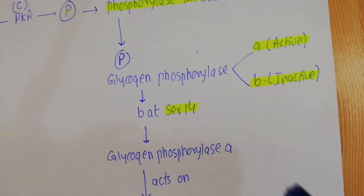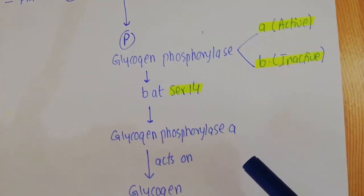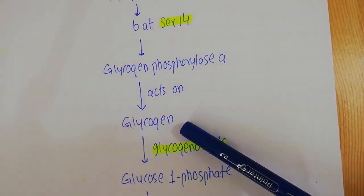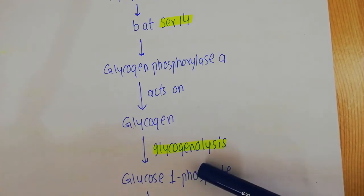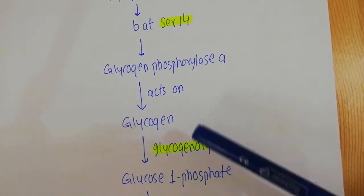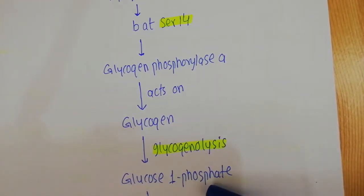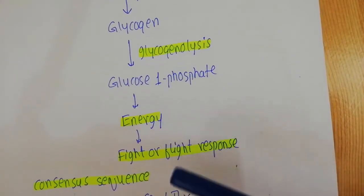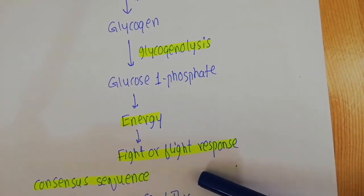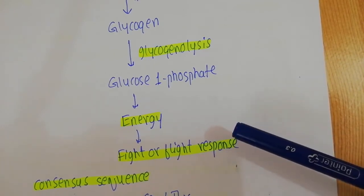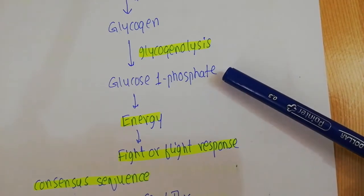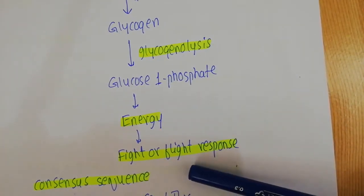When glycogen phosphorylase is converted from the B type into the A type, it acts on glycogen present in the liver or muscles. Glycogen phosphorylase A carries out glycogenolysis — the breakdown of glycogen — producing glucose-1-phosphate, which is utilized as a source of energy for the fight-or-flight response. So protein kinase A activates phosphorylase kinase, which converts glycogen phosphorylase B into the A form, which then releases glucose-1-phosphate for energy.